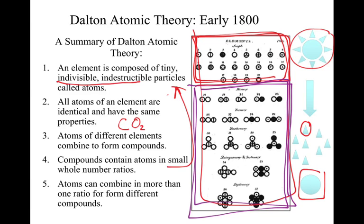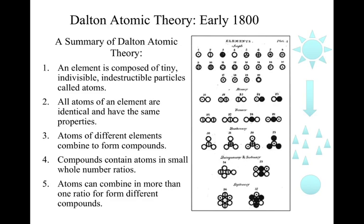Atoms can combine in more than one ratio to form different compounds. We've been talking about carbon dioxide, but we could just as easily do carbon monoxide — I'm still taking carbon and oxygen, but because I combine them in a different whole number ratio, I generate a different compound. Keep these theories in mind, because as we go through and look at our advances within the last 120 years, you'll notice that some of Dalton's theories hold true and some do not. Everything we're going to work through within the last 100 years, Dalton didn't have access to, and yet he was still able to come up with pretty amazing predictions based off of that.